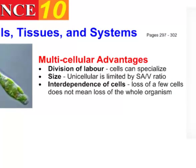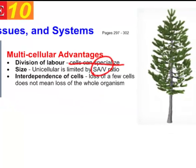There are some advantages to being multicellular. One is division of labor - instead of one cell that has to do everything, you can divide your labor and get cells that specialize, so different cells can do different jobs. You can also achieve size advantages. A unicellular animal or plant can only be so big because it has to obey the surface area to volume ratio we talked about previously.